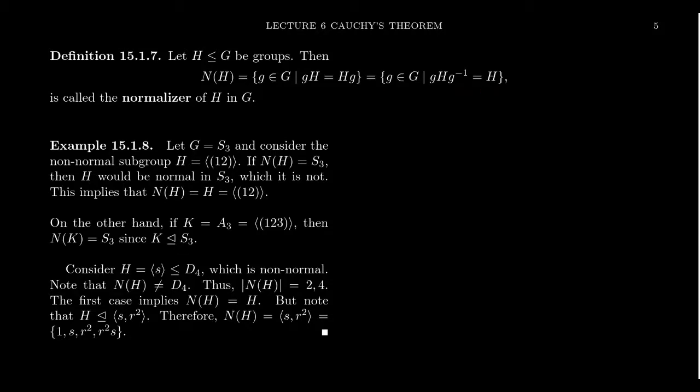Now I want you to recall that a group acts on its set of subgroups by conjugation, kind of like we're seeing right here. You can conjugate a subgroup and get another subgroup. So the collection of subgroups is itself a G set. The group acts on it by conjugation. Now under this action, the normalizer N of H is none other than the isotropy subgroup of H with respect to this group action. So in particular, N of H is a subgroup of G because isotropy subgroups are always subgroups.